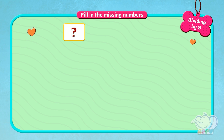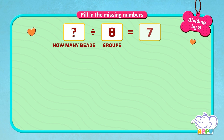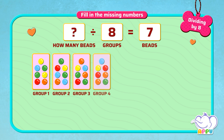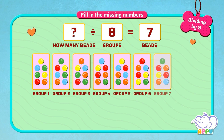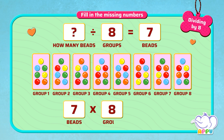We have to find out how many beads when divided into 8 groups gives us 7 beads. We know that 7 beads in 8 groups equals 56. How do we do this? We use multiplication that we learned earlier. 7 times 8 equals 56.